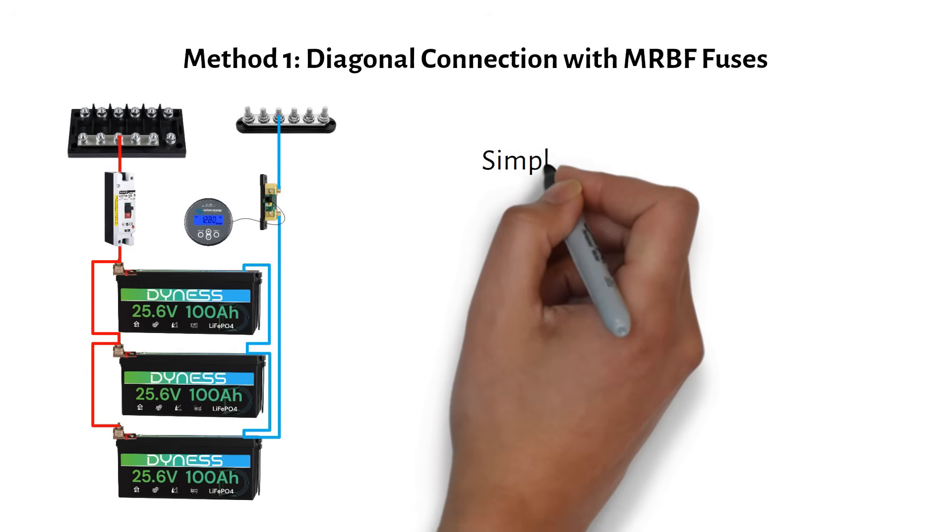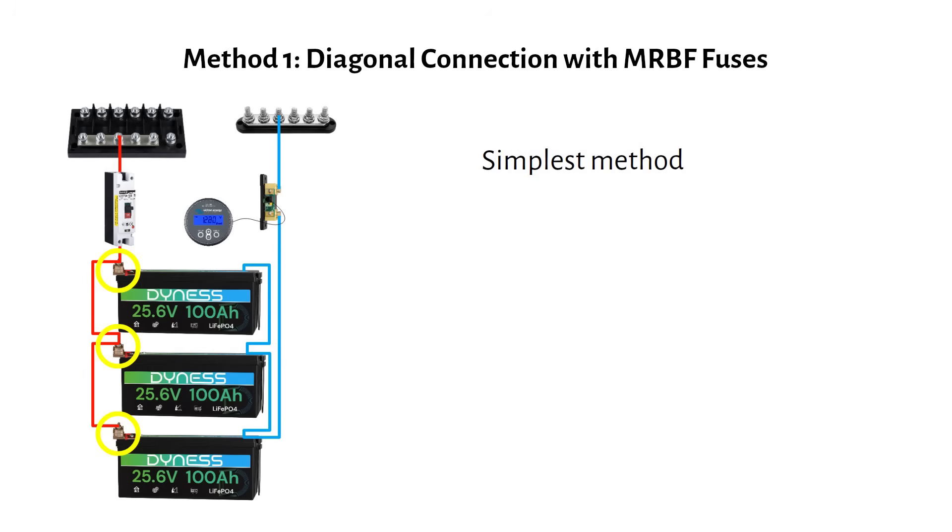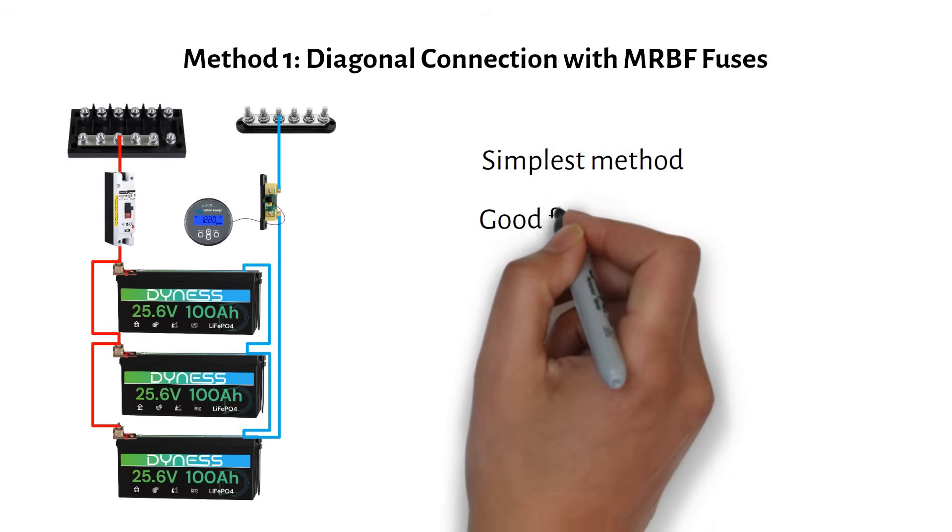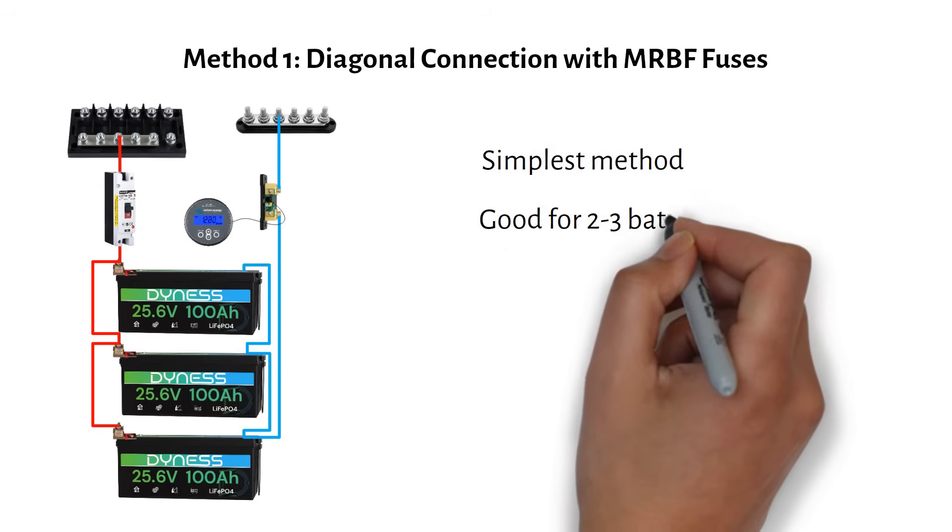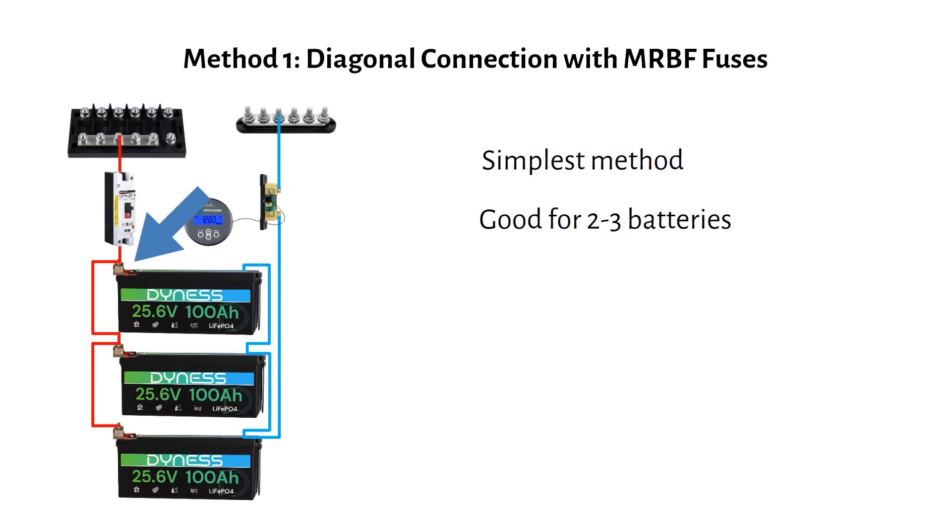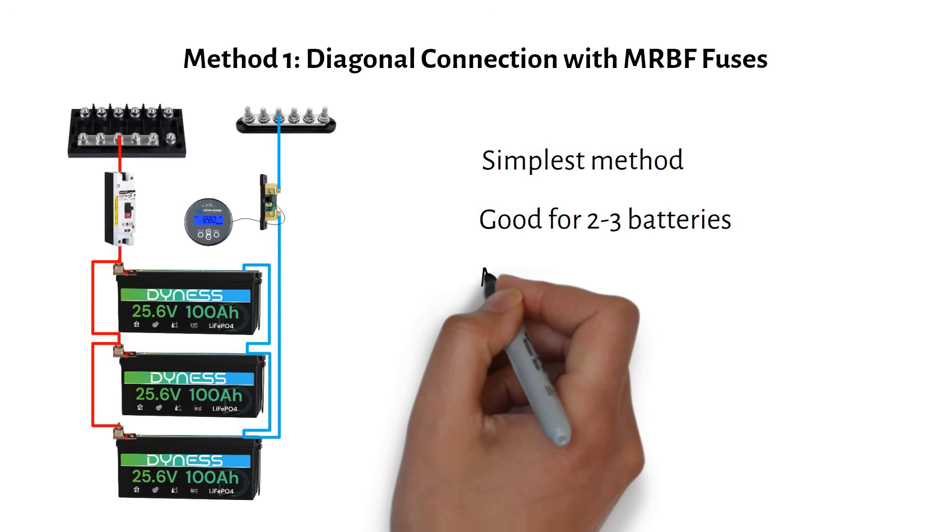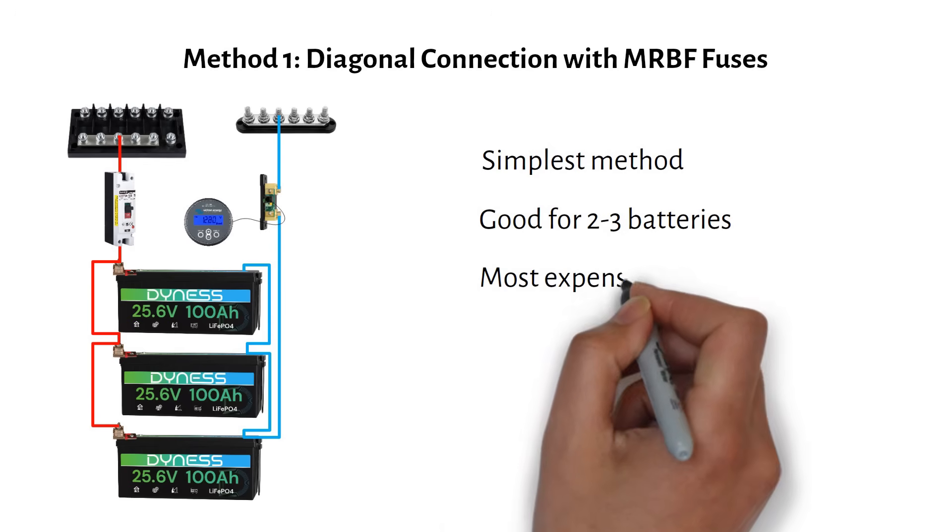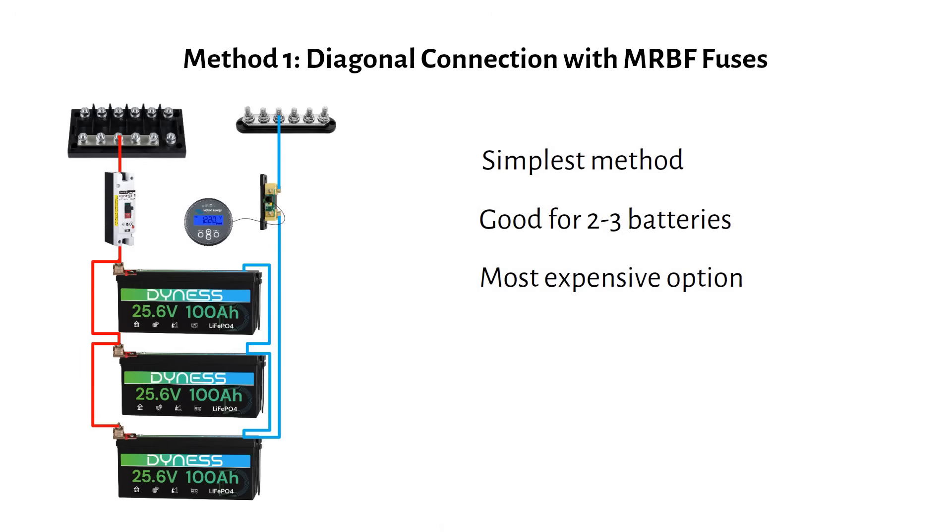The first method is the simplest. You mount MRBF fuses directly on each battery terminal, then run cables from each battery to your main bus bar. This is straightforward and works great for two or three batteries. Notice how we take the main positive from battery 1 and the main negative from battery 3. This helps with current sharing. The downside? It's the most expensive option because all your cables need to be the same thickness and MRBF fuses aren't cheap.